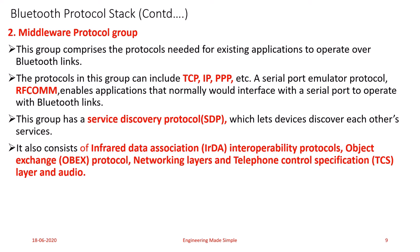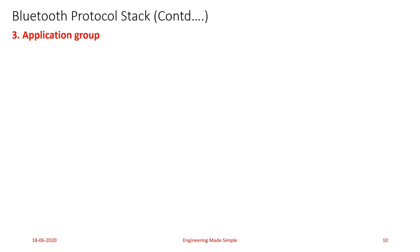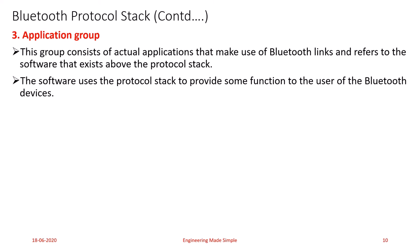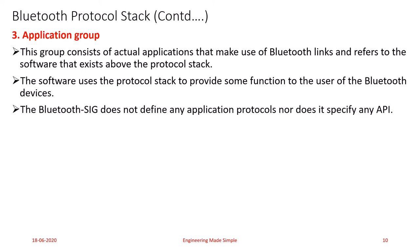The third and last group in the Bluetooth protocol stack is the application group. This group consists of actual applications that make use of Bluetooth links and refers to software that exists above the protocol stack — similar to the application layer of the OSI model. The Bluetooth Special Interest Group does not define specific application layer protocols or any API, but it provides support to applications that use Bluetooth technology above the protocol stack.